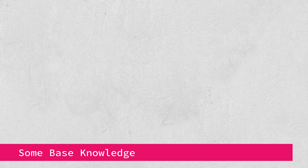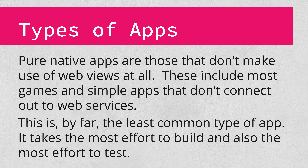Let's start with some base knowledge before we hop into actually getting started with testing. Let's get acquainted with the different types of apps as it pertains to testing. Up first, we have pure native apps. These are typically written entirely to use the native UI toolkit, and usually written in Objective-C or Swift on iOS, and Java or Kotlin on Android. This also includes most games, though many do include web views for things like authentication. Pure native apps are the least common type of app by far, and the majority of apps include some web views.